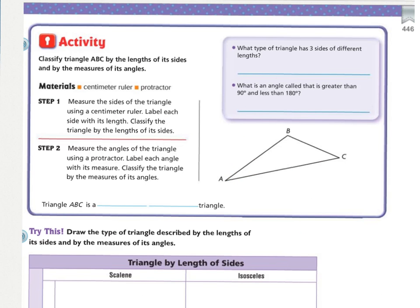For this activity, you need a ruler — we are not going to be using the protractor. Using the ruler and your knowledge of angles, we are going to classify triangle ABC, because you name triangles by their vertices. Classify triangle ABC by the length of its sides and by the measure of its angles, so you're giving it two names. Measure the sides using the centimeter ruler and write the measurement next to each side. Press pause and measure your lengths.